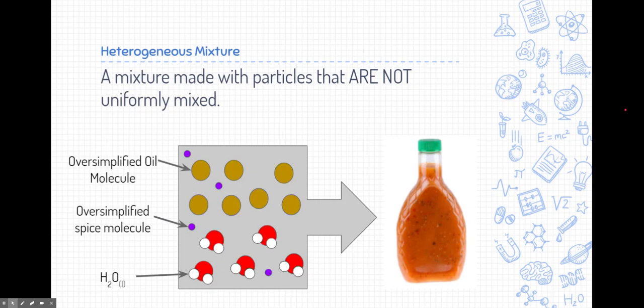Let's contrast heterogeneous mixtures with homogeneous mixtures. Heterogeneous mixtures are mixtures that are made with particles that are not uniformly mixed. And so here, let's take a look at a macro-level model of a vinaigrette dressing. So this is a salad dressing made of things like vinegar and oil and water and spices.